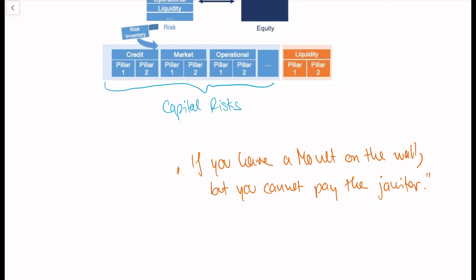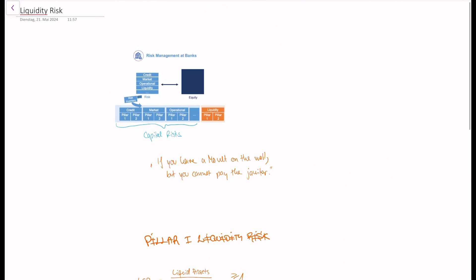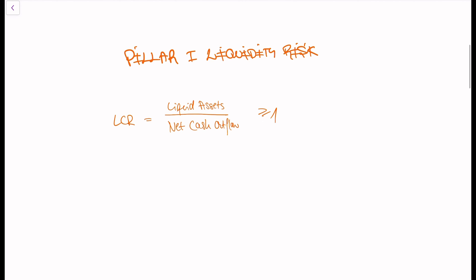That is the problem that liquidity risk managers deal with. They have the task to ensure that the bank always has enough cash if it has to pay out something. As with every risk type we have looked at, there's a Pillar 1 and a Pillar 2 approach to limiting liquidity risk. We're going to first look at the Pillar 1 approach, which is rather simple. It has ratios like the Liquidity Coverage Ratio, LCR, which have to be met.